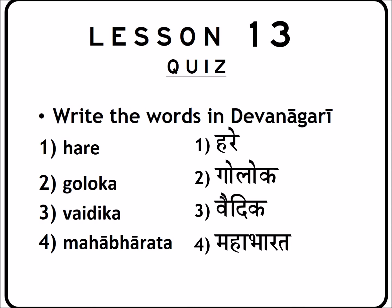Number two is Goloka, which is literally translated as 'the planet of the cows,' and is also another name for Lord Krishna's divine abode. Third is Vaidika — it's actually the proper pronunciation of the term we often say as 'Vedic,' as in Vedic literature. It's pronounced Vaidika — anything pertinent to the Vedas. And the last is Mahābhārata, which literally translates to 'the greater India.' However, it is a scripture compiled by Vyāsadeva, which contains the events of the royal dynasty of Greater India and all the events that led up to the advent of Kali Yuga. The Bhagavad Gītā is present in the Mahābhārata.